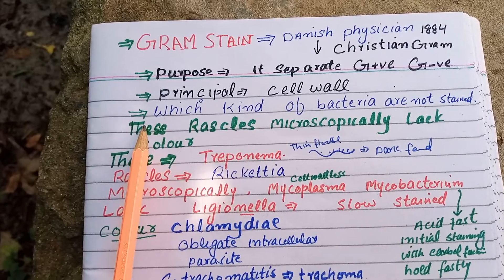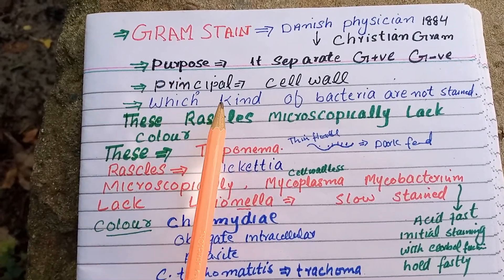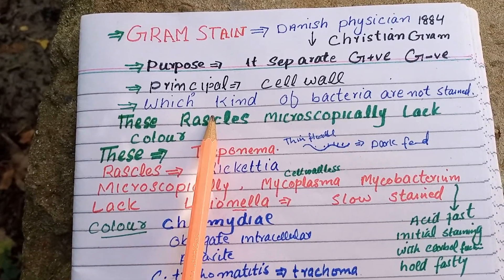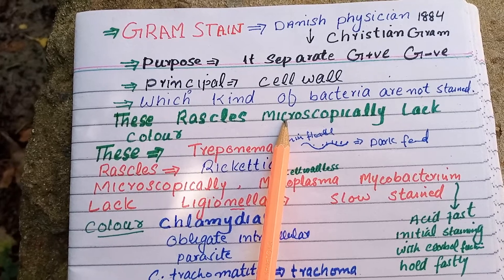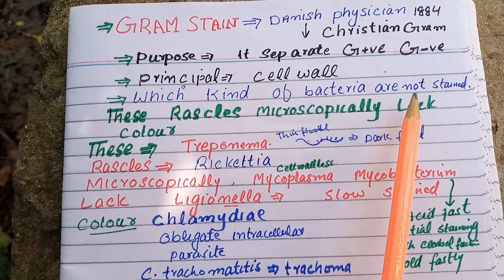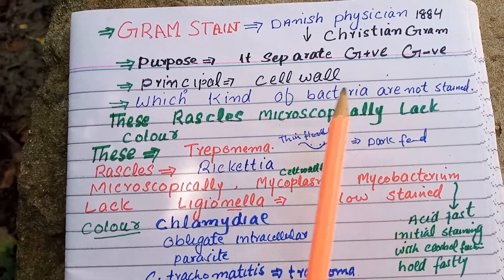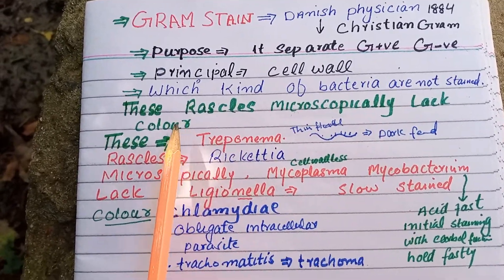The other is Chlamydia. Why is Chlamydia not stained? Because Chlamydia is an obligate intracellular parasite.